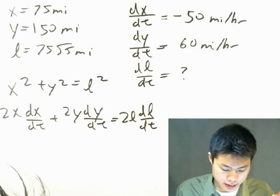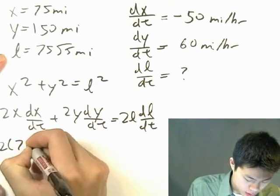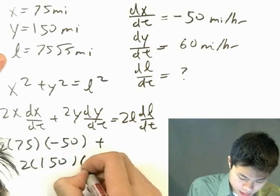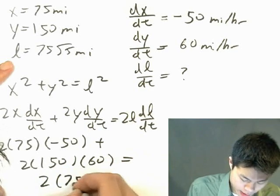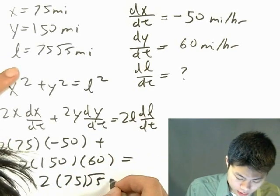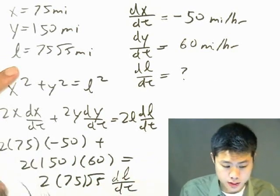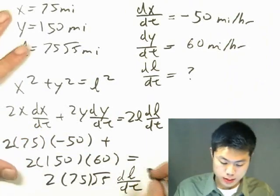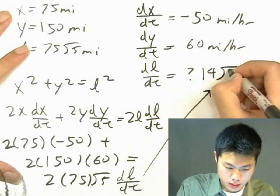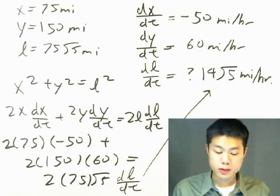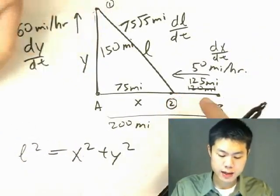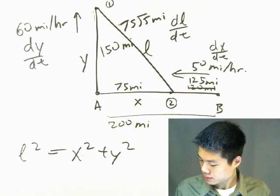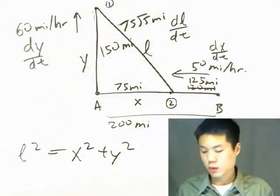Now plug in everything: 2 times 75 times negative 50, plus 2 times 150 times 60, equals 2 times 75 root 5 times dL/dt. Solving for dL/dt gives us 14 root 5 miles per hour. So this distance between the two cars is increasing at a rate of 14 root 5 miles per hour.